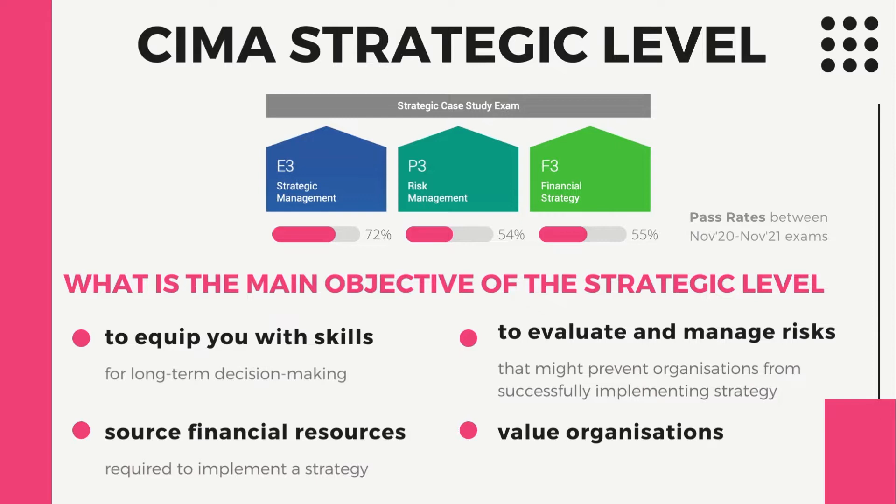P3 is part of the strategic level. The strategic level consists of three objective tests and one case study. The objective tests have to be taken and passed before moving on to the case study exam. The objective tests are: E3, which focuses on strategic management; P3, which focuses on risk management; and F3, which focuses on financial strategy.